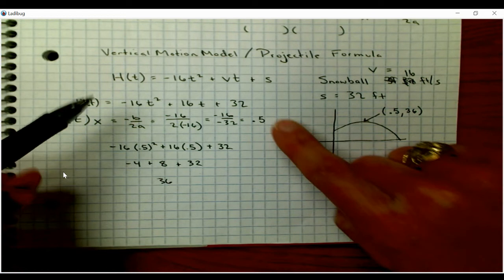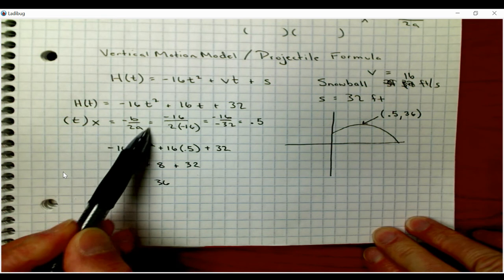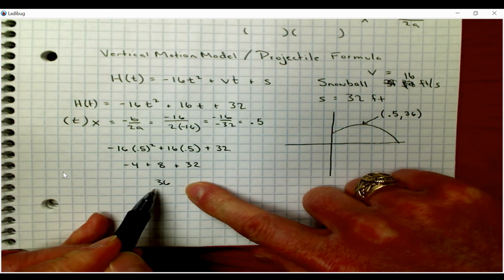Again, the process was to plug in our initial velocity, which is the v, and our initial height, which is our s, the starting height, 32. And then we used our axis of symmetry formula to find the x part. And then we plugged in our x, or our t for time. X and t are the same. They're interchangeable here to find our y, or our height in this case. So our final answer is at half a second, the snowball would be 36 feet in the air.